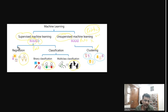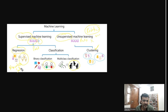In supervised learning, there are two kinds of algorithms. First is regression — in regression, the output will always be a number. So if there is any question where they ask you to predict sales, or how many people will come to the stadium to see the match, then we use the regression algorithm, which is a supervised algorithm.